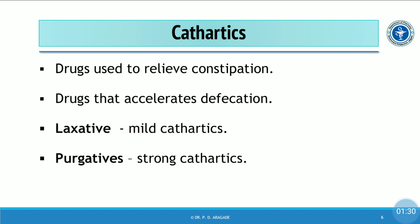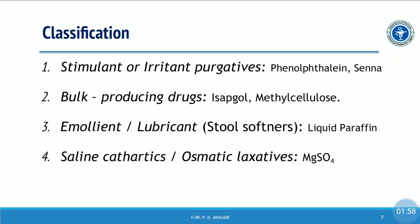Cathartics are drugs used for the treatment of constipation, as these drugs have the ability to accelerate defecation. Cathartics, laxatives, and purgatives — these three terms are used for drugs which treat constipation. Laxatives are mild cathartics while purgatives are strong cathartics. There are four types of cathartics, classified mainly based on mechanism of action.